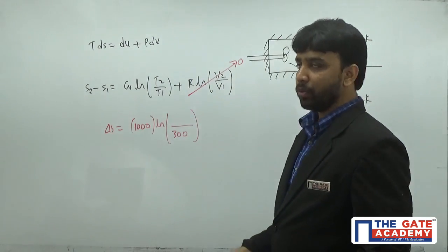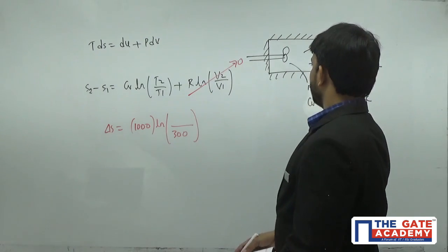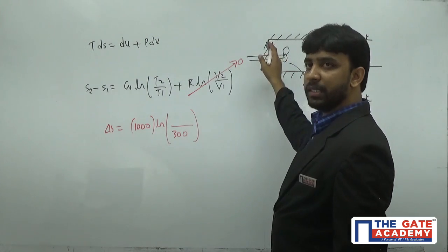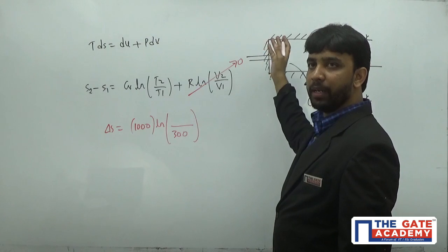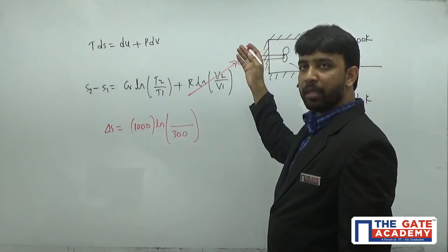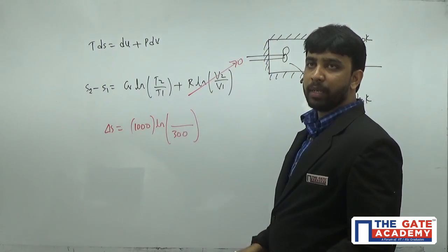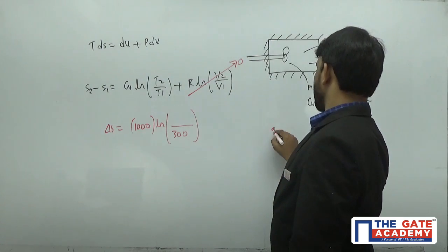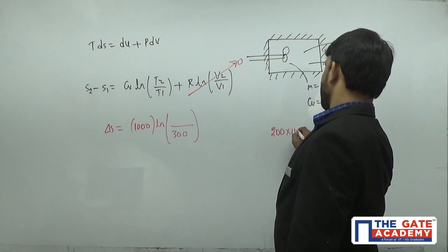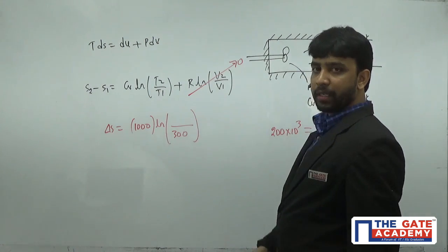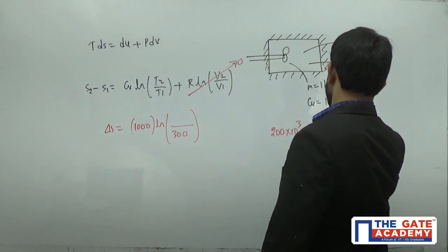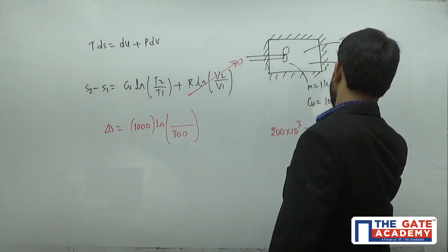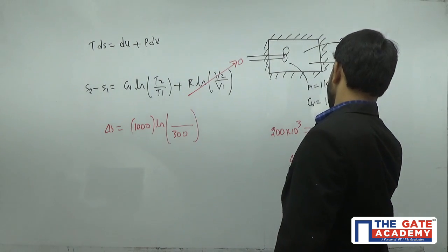So what is T2? I can get T2 like this: the change in temperature, or the heat supplied to the gas to cause the change in temperature, is exactly equal to the work supplied by the stirrer. He is saying that work supplied by the stirrer is 200 kJ. This 200 kJ is used for increasing the heat of this gas.